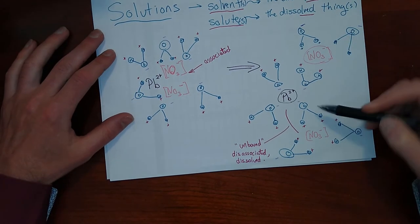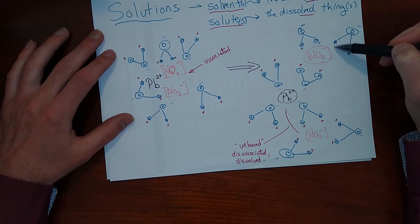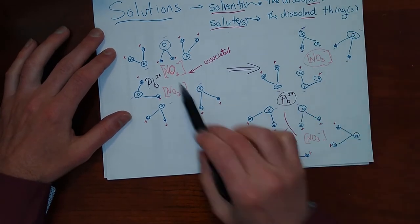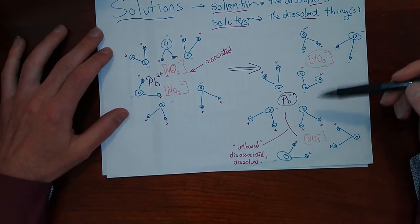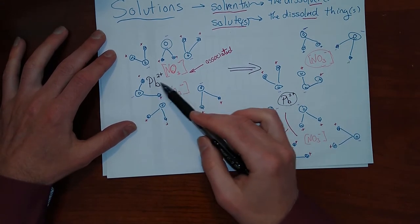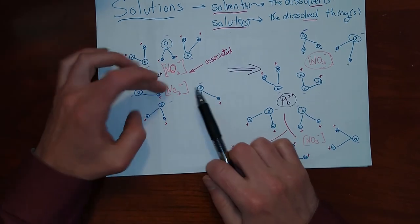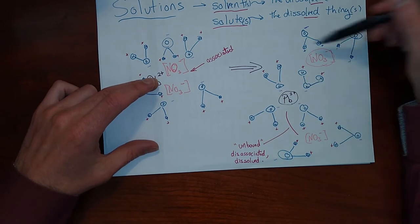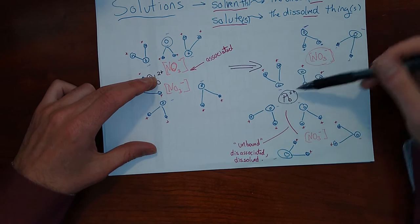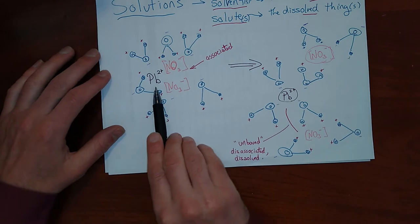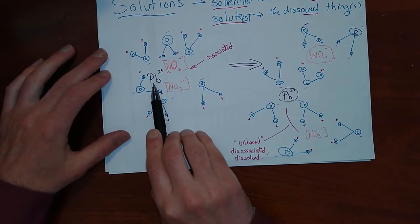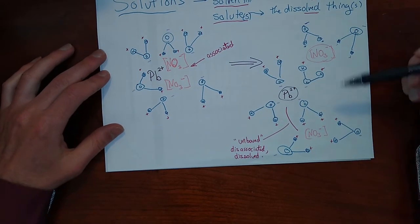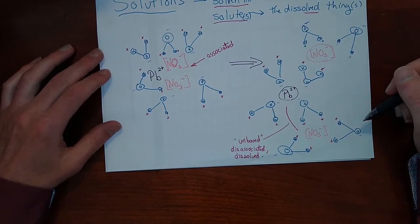After dissolving occurs, you have a situation where all the negative ends of the water molecules have surrounded and insulated the lead ion from the nitrates, and the negative charge on the nitrates is now surrounded by all the positive charges of the hydrogen ends of the water molecules. This is what makes a good solvent — a polar substance like water with positive and negative regions. If the water evaporates, the lead nitrate is going to rebond just like before, but as long as the water is present it prevents that from happening easily.